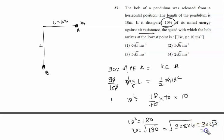5. So it is 6 root 5 meters per second. The right answer is option one, that is 6√5 meters per second.